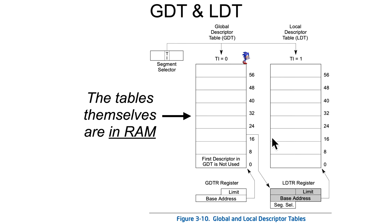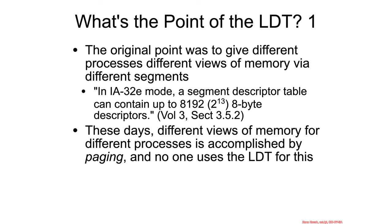The tables themselves are a set of data structures stored in RAM. So what is the point of the LDT? The original point was to give different processes different views of memory, because the LDT could have 8,000 different entries, so you could imagine 8,000 different processes having 8,000 different segments covering 8,000 different ways of looking at memory. Practically speaking, no one actually uses it for that these days — instead they use a mechanism called paging that we'll learn about later on in the class.